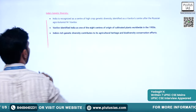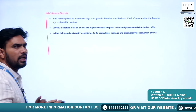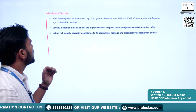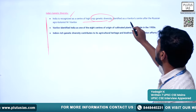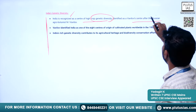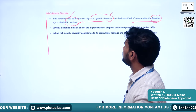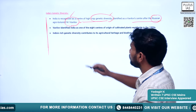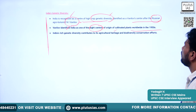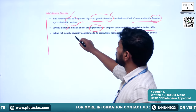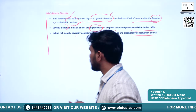India is recognized as a center of high crop genetic diversity. Scientist Vavilov identified India as one of the eight centers of origin of cultivated plants worldwide in the 1950s. India's rich genetic biodiversity contributes to its agricultural heritage and biodiversity conservation efforts.